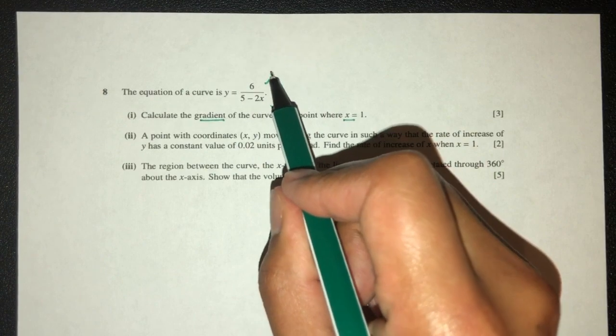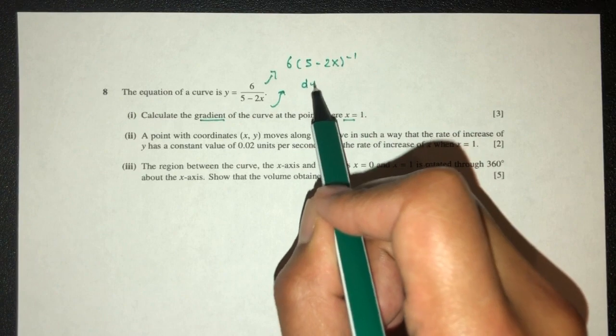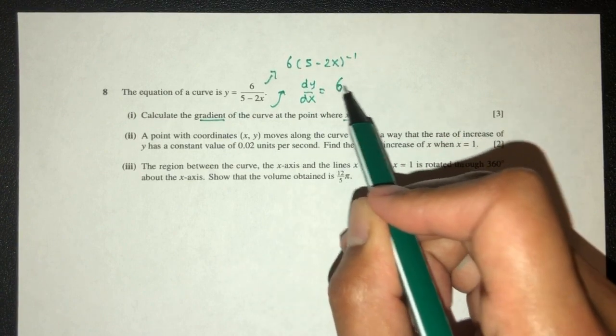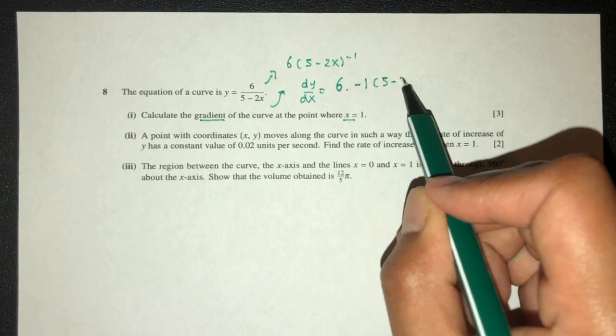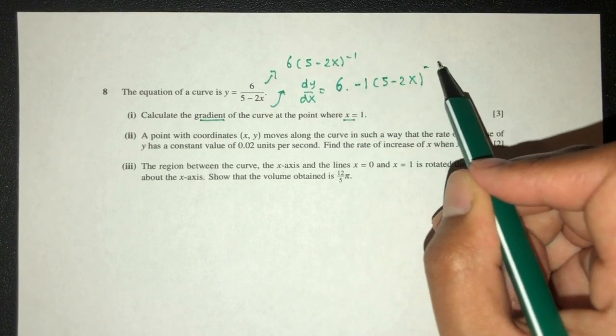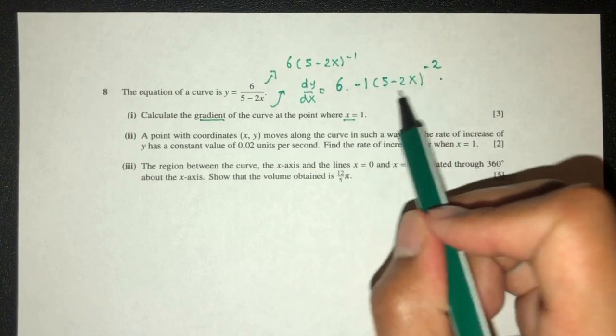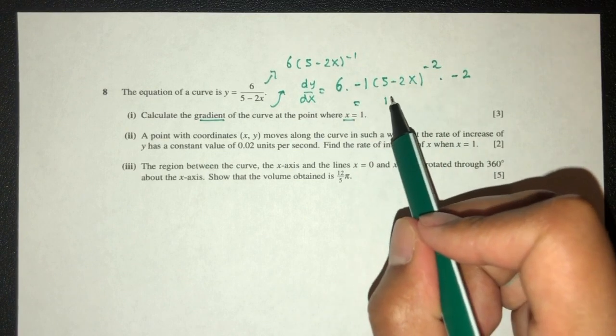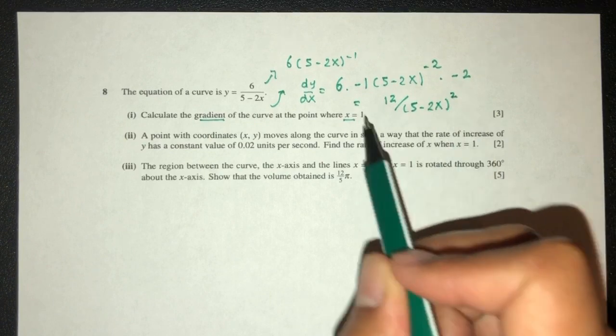So we know this is also 6(5-2x)^(-1). So dy/dx can be found by taking 6 as a multiple outside. First multiply by the power minus 1, giving (5-2x)^(-2). Then multiply by d/dx of the value inside, which is minus 2. That will be 12/(5-2x)². This is dy/dx.